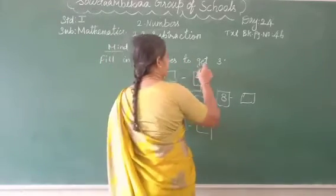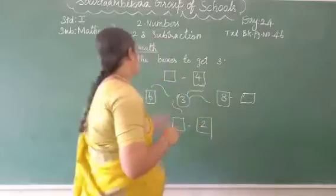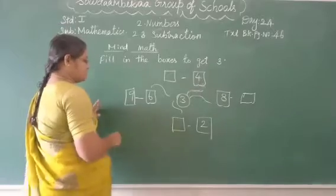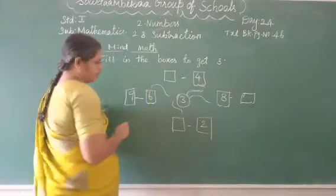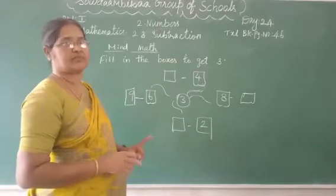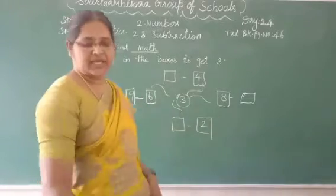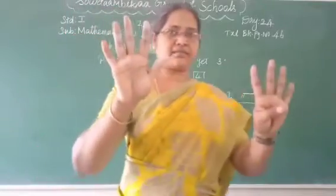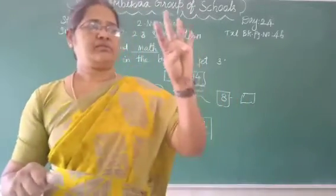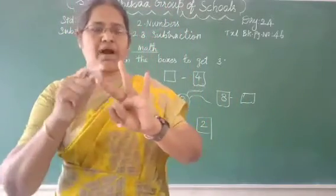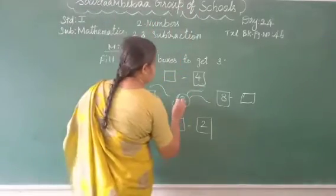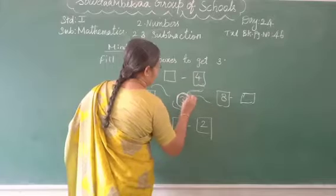Here it is. Number 3 is given. Only 1 is given. 9 minus 6. Leave the 9 fingers, fold the 6 fingers: 5, 6. Leftover 1, 2, 3. The answer is 3. Number 1 is done for you.